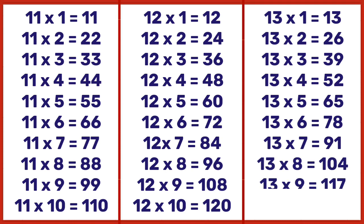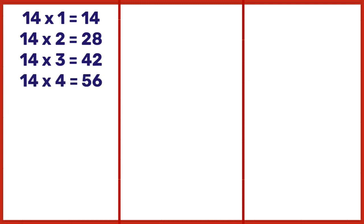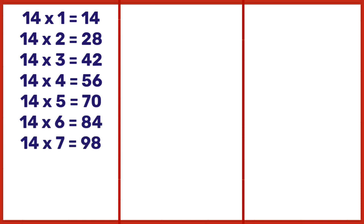13 nines are 117, 13 tens are 130. 14 ones are 14, 14 twos are 28, 14 threes are 42, 14 fours are 56, 14 fives are 70, 14 sixes are 84, 14 sevens are 98, 14 eights are 112.